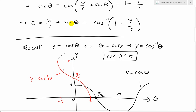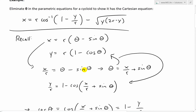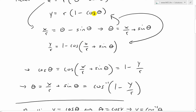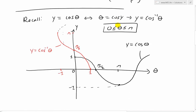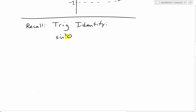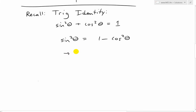The only thing remaining is the sine theta term. We can eliminate it by using the Pythagorean trig identity — I'll put a link in the description for the proof. The most common form is sine squared theta plus cosine squared theta equals 1. Solving for sine, we move cosine squared to the other side: sine squared theta equals 1 minus cosine squared theta. Taking the square root gives sine theta equals plus or minus square root of (1 minus cosine squared theta).